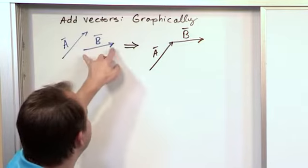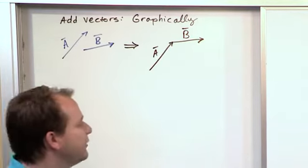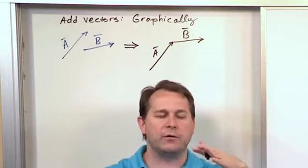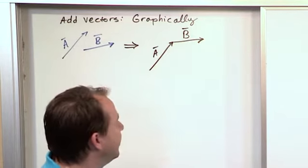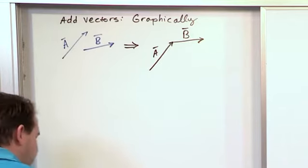Vector B has the same length as what we had drawn there and it's also pointed in the same direction. All we did was rearrange how we're drawing it so that we draw it head to tail. Head of this vector to tail of the other vector.